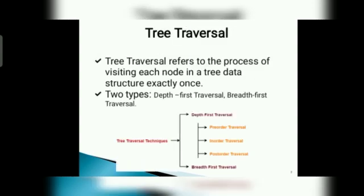Tree traversal refers to the process of visiting each node in a tree structure exactly once. It is of two types: depth first traversal and breadth first traversal. In depth first traversal, there are three types.